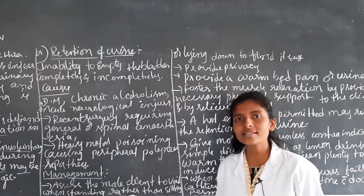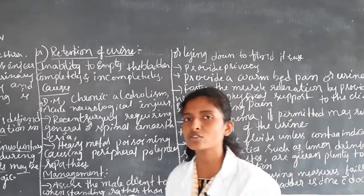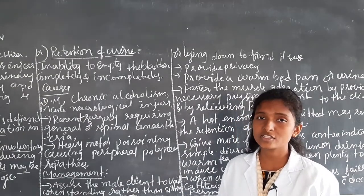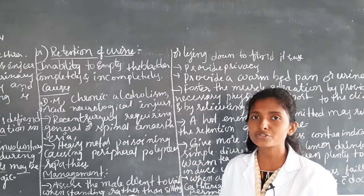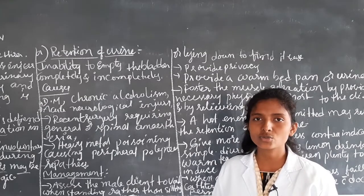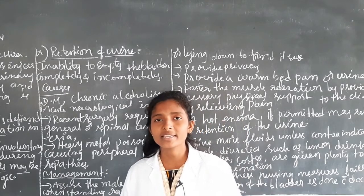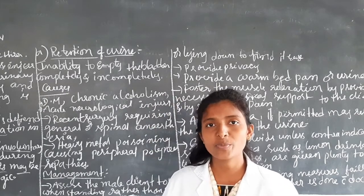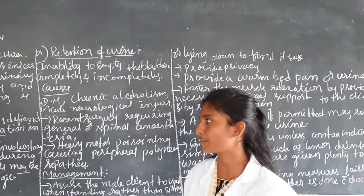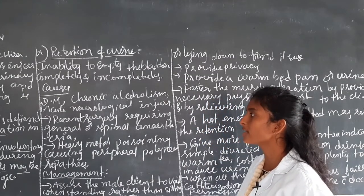What are the causes for this retention of urine? The first cause is diabetic mellitus, which is a metabolic disorder. Chronic alcoholism also increases the chance of getting retention of urine. The next cause is acute neurological injuries — if the patient gets any fracture to the spinal cord, there is a chance to get retention of urine.